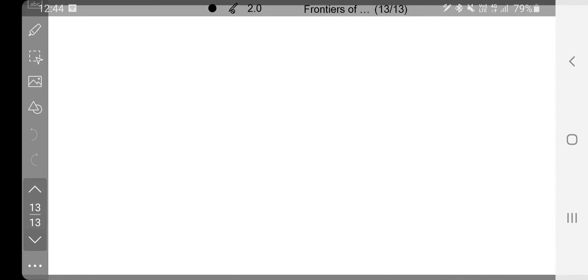And analogously in the one-dimensional case, you will have also Ex plus Ey plus Ez equals h-bar squared over 2m, kx squared, and then the two states will be quantized in the y and z-direction: ny squared pi squared over ly squared plus nz squared pi squared over lz squared.